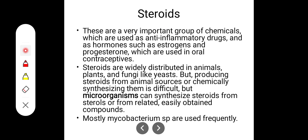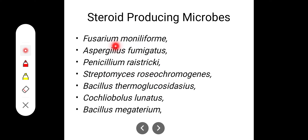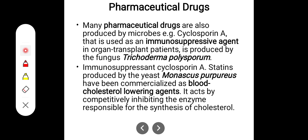Steroids are an important group of chemicals used in anti-inflammatory drugs and hormones such as estrogens and progesterone, which are also used in oral contraceptives. Steroids are distributed in animals, plants, and fungi like yeast, but producing them from animal sources or chemically synthesizing them is very difficult. Microorganisms can synthesize steroids from sterols and related compounds. Examples include Fusarium moniliforme, Aspergillus fumigatus, Penicillium, Streptomyces roseochromogenes, Bacillus thermoglycosidicus, Curvularia lunata, and Bacillus megaterium.